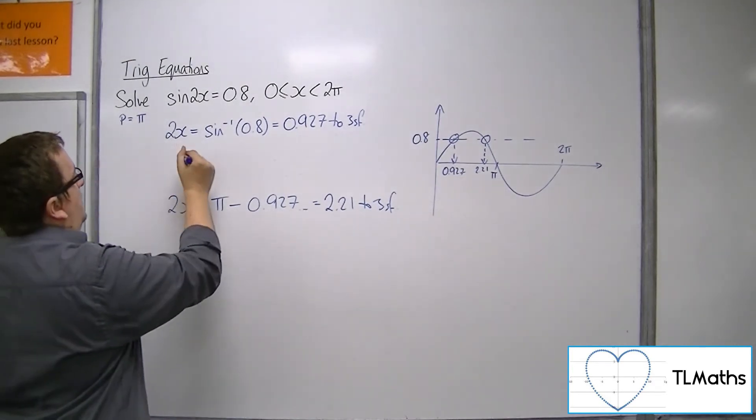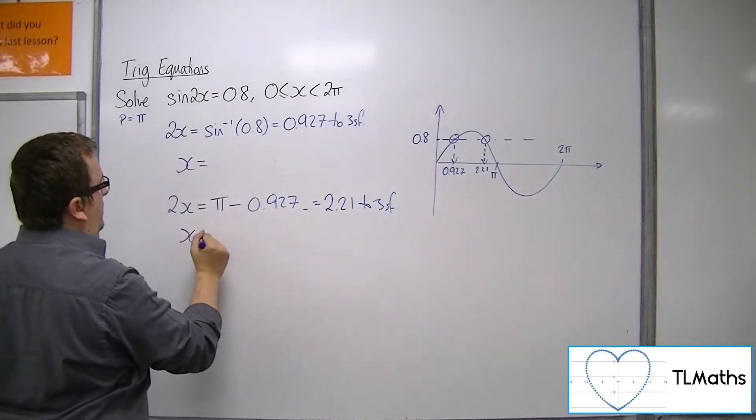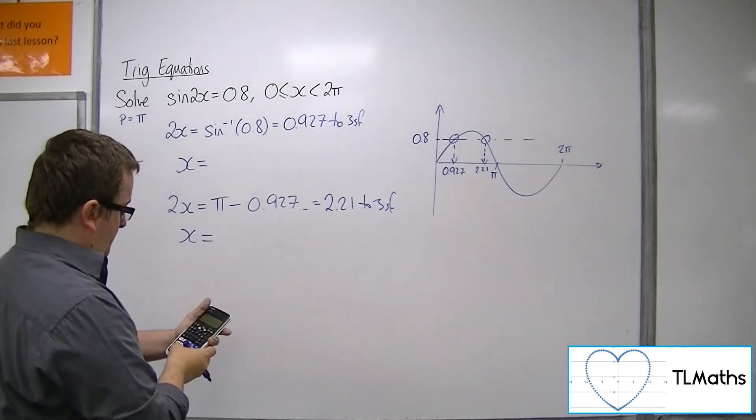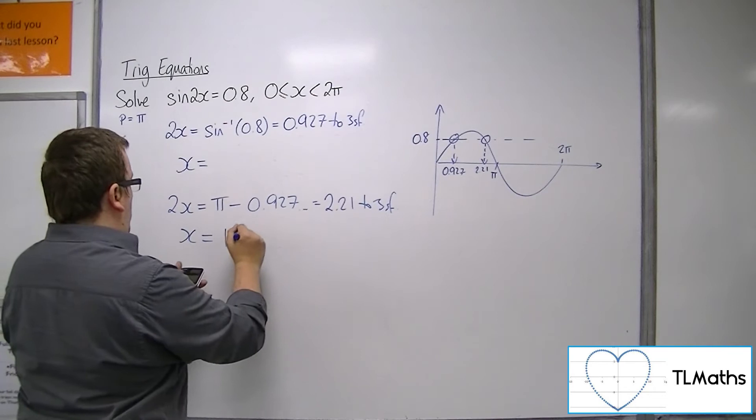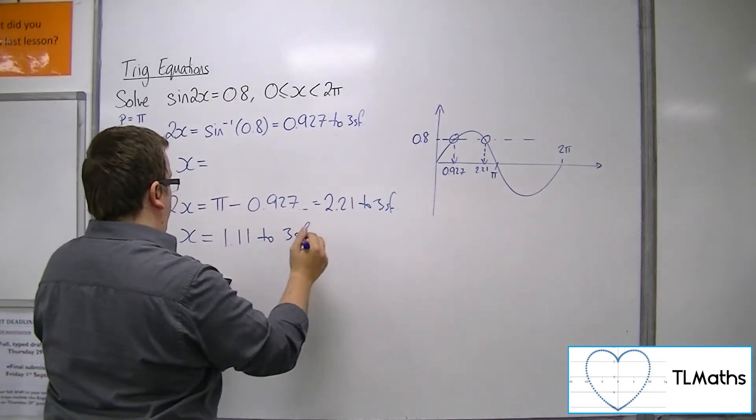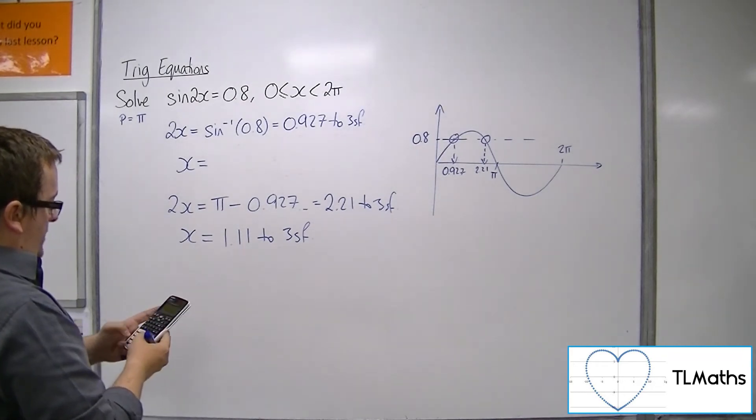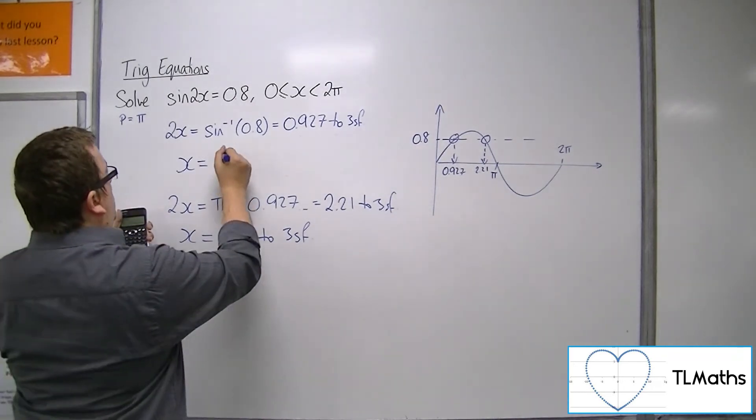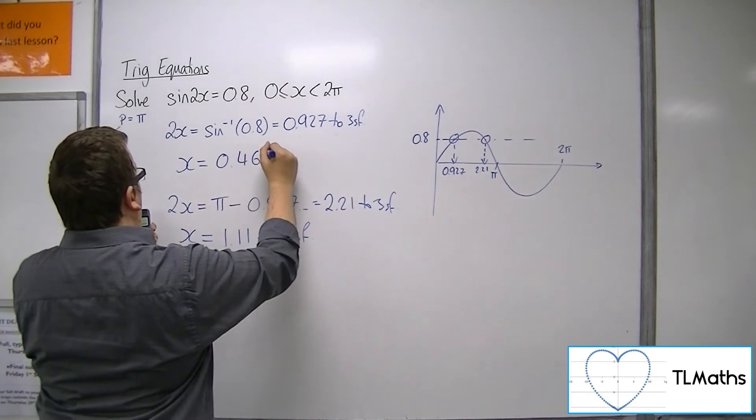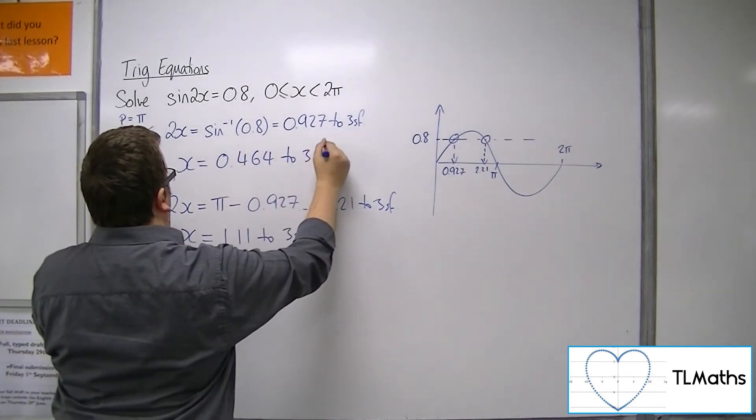So now if we apply the transformation, we want to halve both of those answers. So this is 1.11 to 3 sig fig, and inverse sine of 0.8 divided by 2 is 0.464 to 3 sig fig.